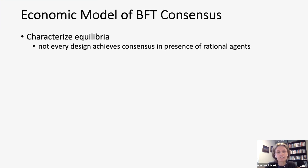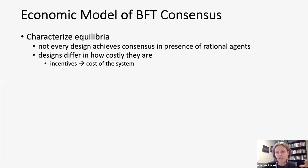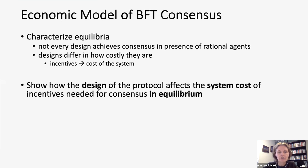In this paper, we devise an economic model of Byzantine fault tolerant consensus and characterize all equilibria. We find that not every design that achieves consensus in a traditional distributed database will achieve consensus in the presence of rational, profit-maximizing agents. Different protocol designs also differ in how costly they are — because we need to pay nodes for achieving consensus and punish them for not achieving it, bringing costs to the system.